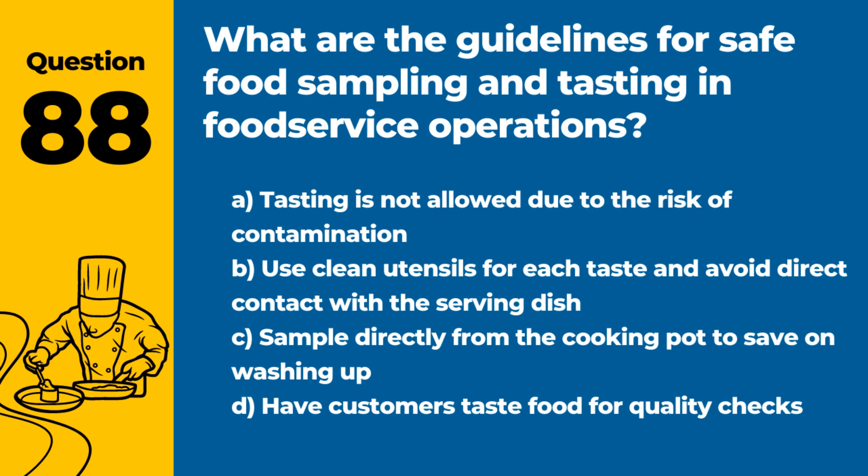Question 88. What are the guidelines for safe food sampling and tasting in food service operations? Answer: B. Use clean utensils for each taste and avoid direct contact with the serving dish. This practice prevents contamination and ensures food safety during tasting.